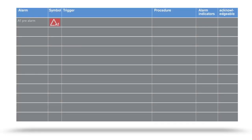The A1 pre-alarm sounds when the concentration is higher than the set threshold value. There is not yet acute danger. This alarm can be acknowledged by pressing the green OK button.